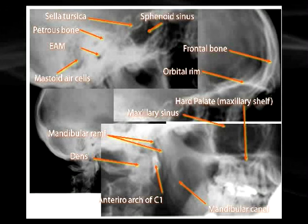You can see the dense petrous bone, which houses the inner ear, and you can actually see two holes in that dense petrous bone. Those are the external auditory meatuses on both sides of the skull, overlapping because this is a plain film — three dimensions compressed down into two dimensions.